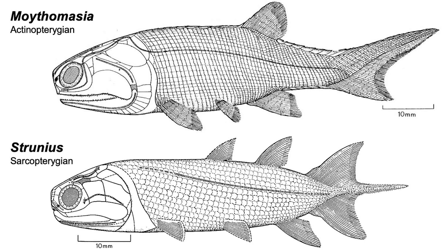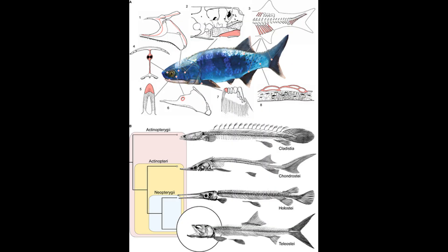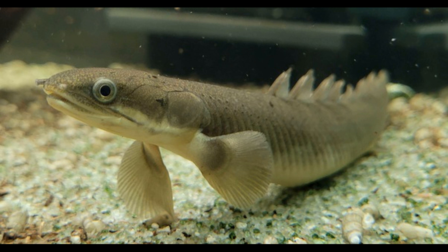Apart from Strunius having two dorsal fins and a symmetrical tail, while Moythomasia has only one dorsal fin and an asymmetrical tail, they look very similar — even the shape of the fins are not much different. Despite the fact that one clade is commonly named after their rayed fins, both bony fish lineages actually started with fins that are rather lobed. Rayed fins is a more derived character that evolved later, and there are still a few ray-finned fish with primitive lobed fins still with us.